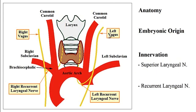Both of these nerves arise from the vagus nerve. The left vagus nerve gives rise to the superior laryngeal nerve as well as the left recurrent laryngeal nerve, which loops under the aortic arch, while the right vagus nerve gives rise to the superior laryngeal nerve as well as the right recurrent laryngeal nerve, which loops under the brachiocephalic artery.